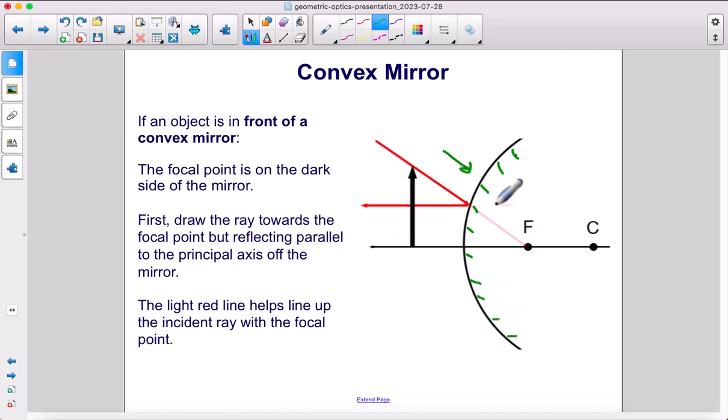If an object is in front of a convex mirror, the focal point is back here on the dark side of the mirror. Remember, that's going to give us a negative focal length.